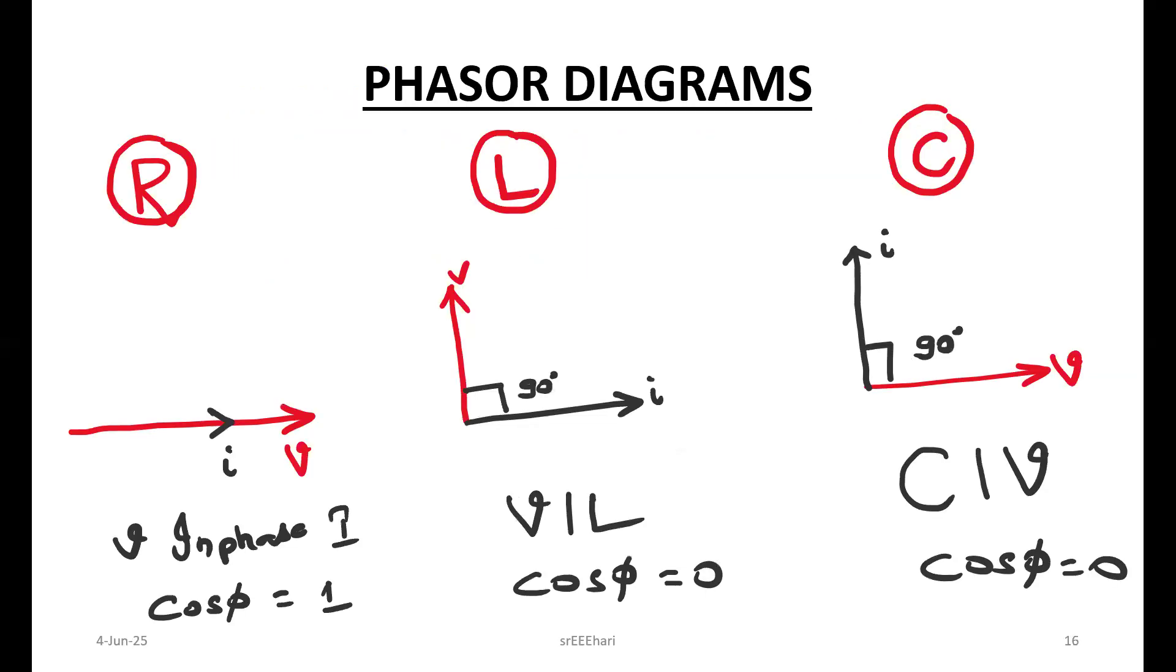These are the different phasor diagrams: pure resistor, pure inductor, pure capacitor. In pure resistor, voltage and current are in phase. There is no angle now. Cos 0 becomes 1. That's the power factor.